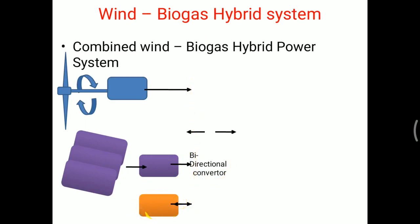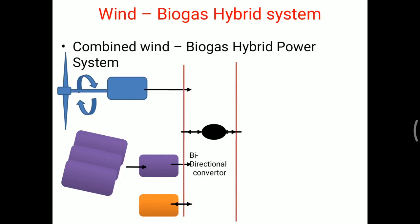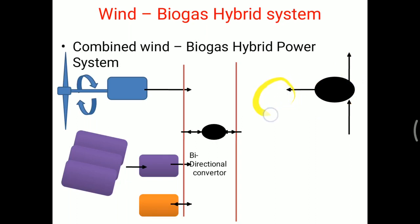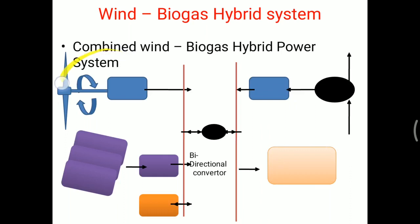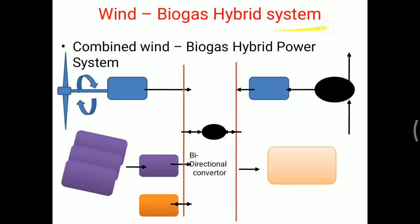The solar array and solar charge controller connect through a bidirectional controller to the battery system. The biogas system generates gas used for cooking and heating, and also drives a generator to produce electrical energy. The AC load is supplied by wind energy or biogas energy through the AC bus. The combination of wind and PV energy maintains a uniform energy flow, ensuring electrical energy supply is continuous and uniform.